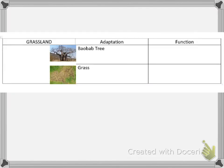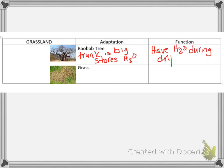Next we have the grasslands. This is the baobab tree. The baobab tree has a super thick trunk so that it stores water when it rains. It doesn't rain there a lot — in grassland areas there are usually not many trees, just small bushes, shrubs, and grass. This tree has adapted to store water for long periods of time so it will have water during dry periods.